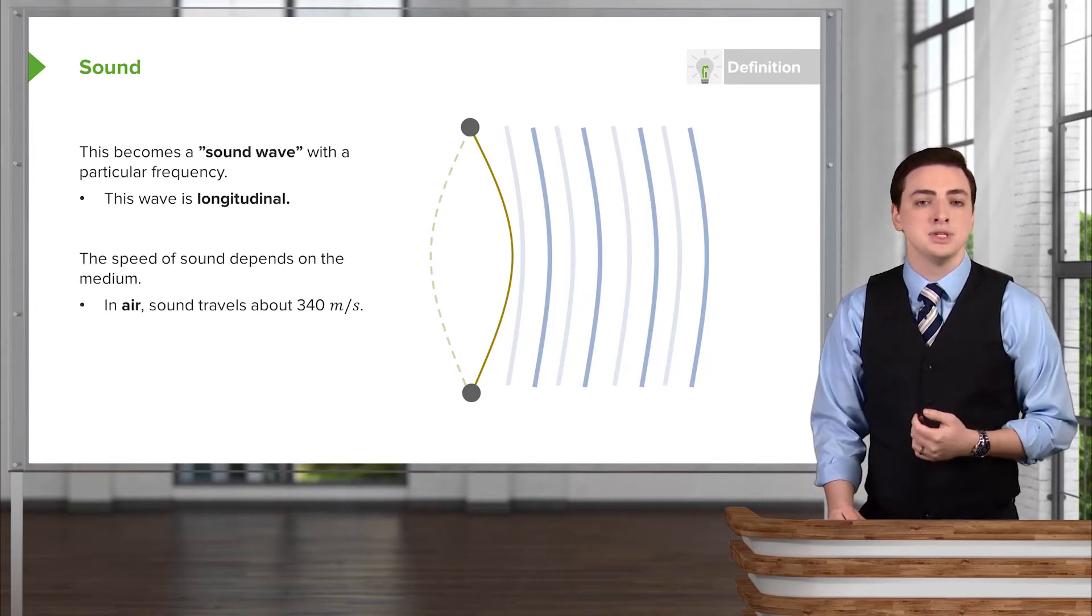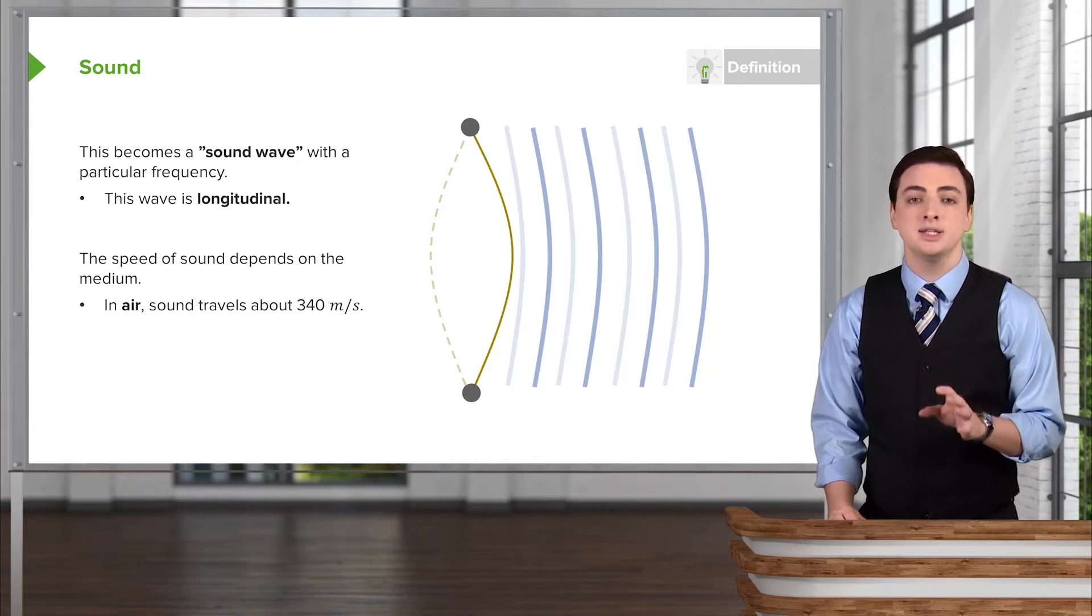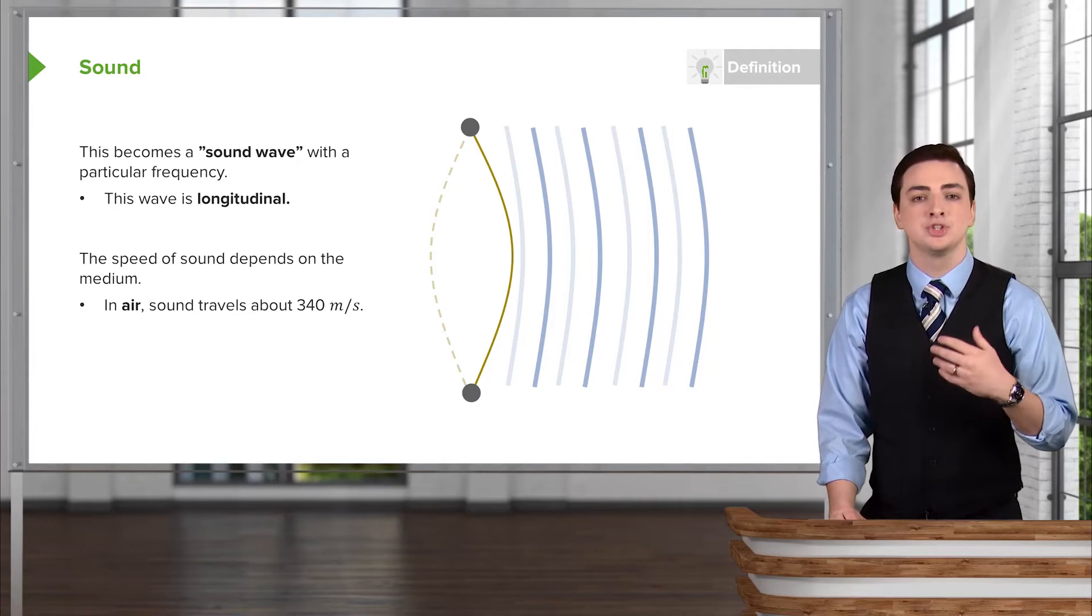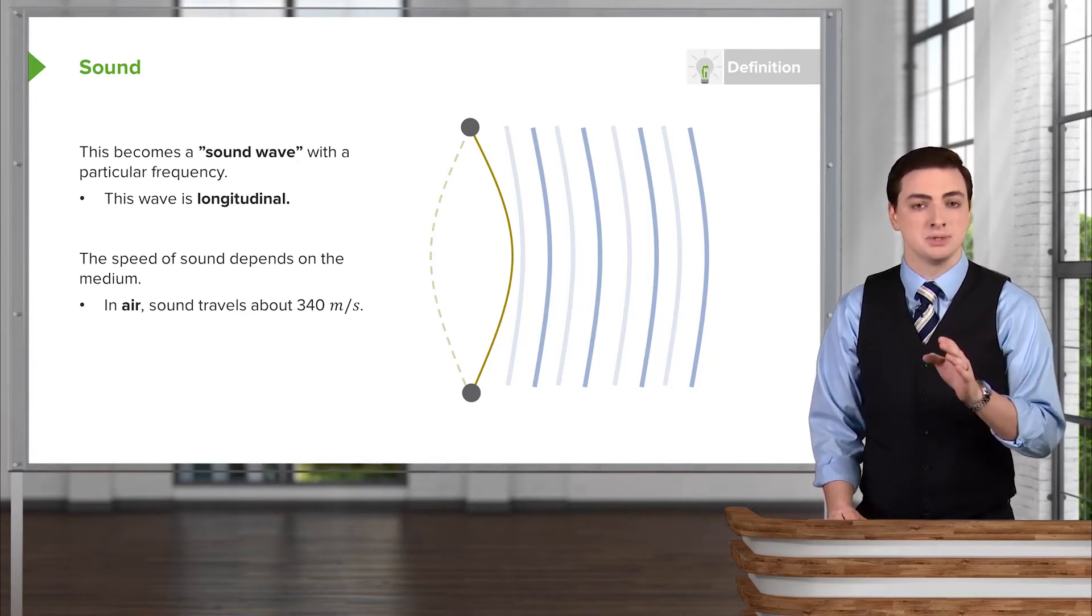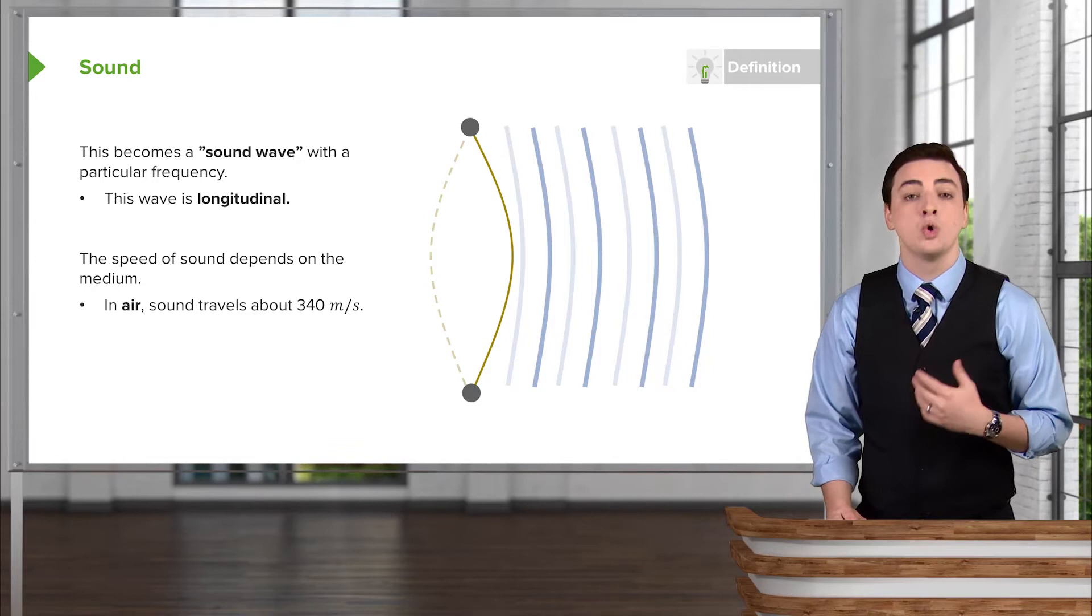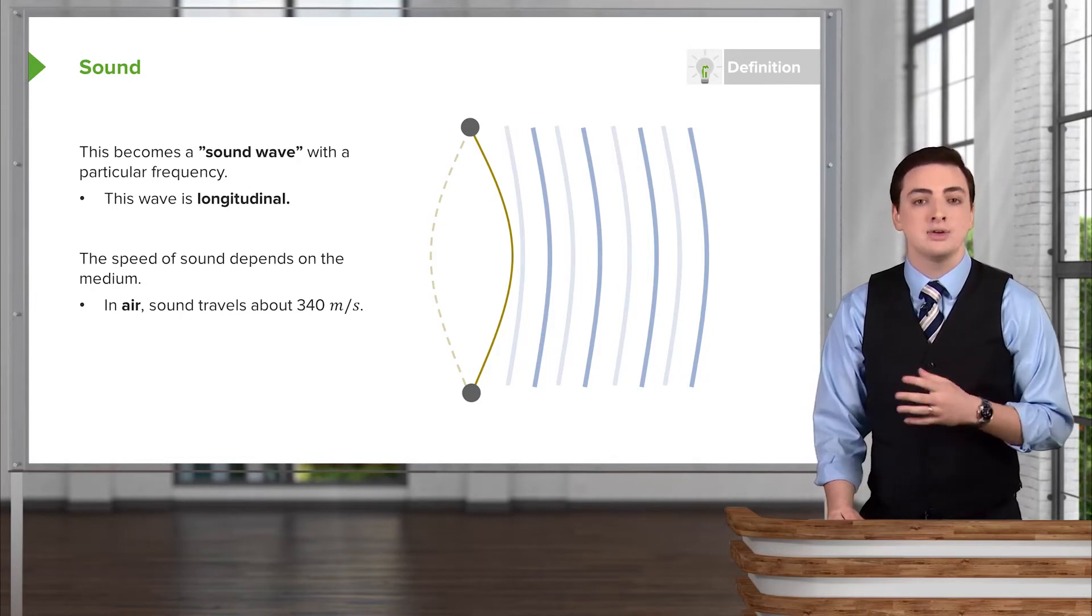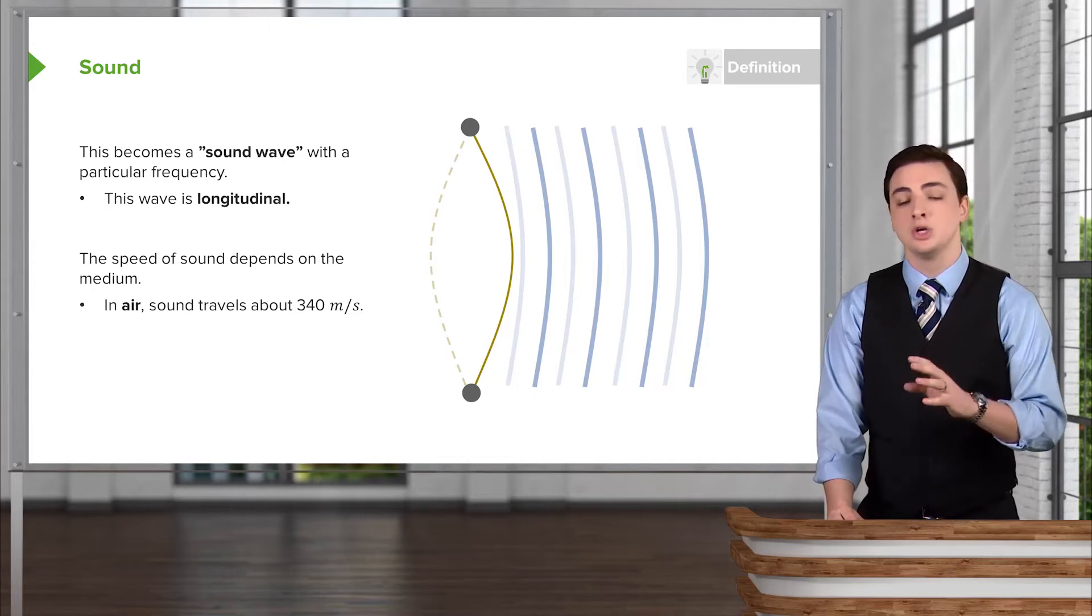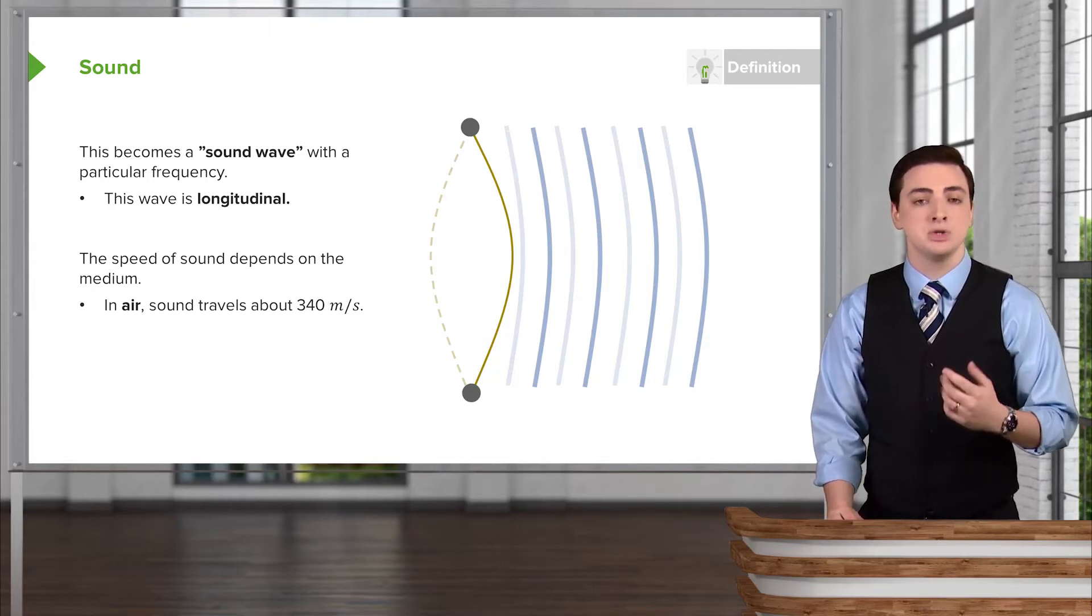The speed of sound, as we talked about with any wave, only depends on the medium through which the sound is traveling. When sound is traveling through air, it always has a particular velocity. You can always know how quickly sound is traveling without having to know the speed of the source. The speed will always be the same.